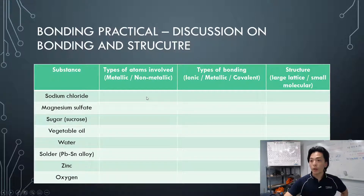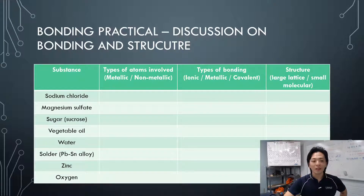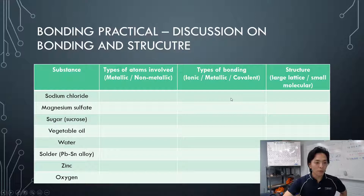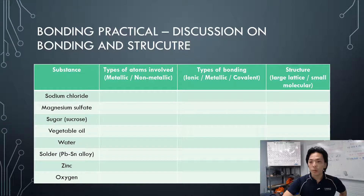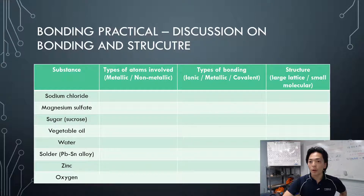Sodium chloride has sodium and chloride — as the name suggests. What are they — metallic or non-metallic? Both: metallic and non-metallic. So the type of bonding should be ionic. Structure-wise, what should sodium chloride make? A lattice — that is what you get from ionic compounds.